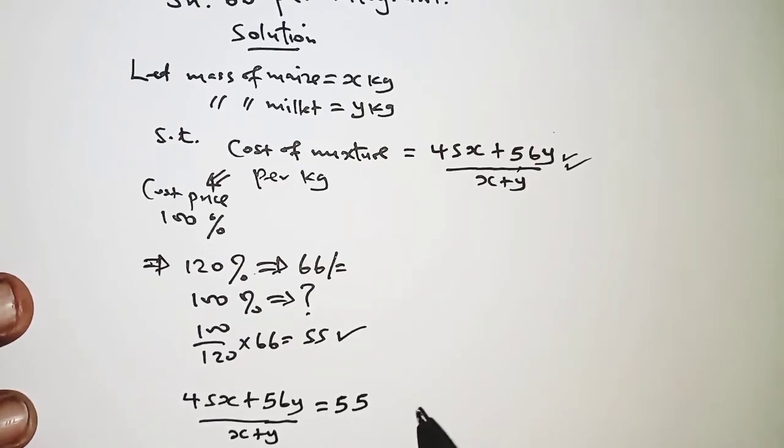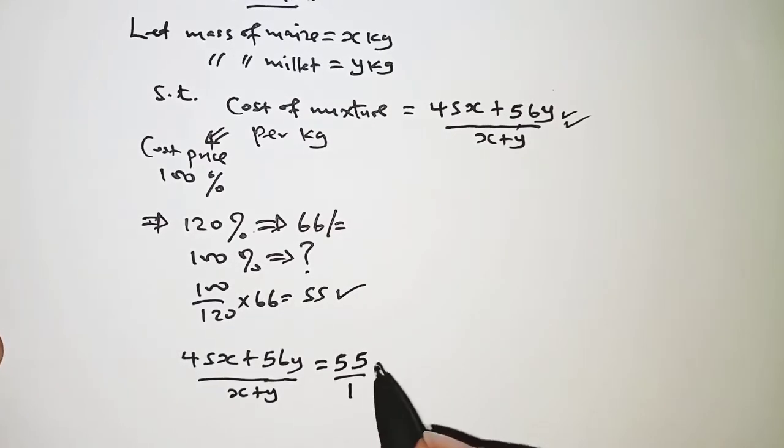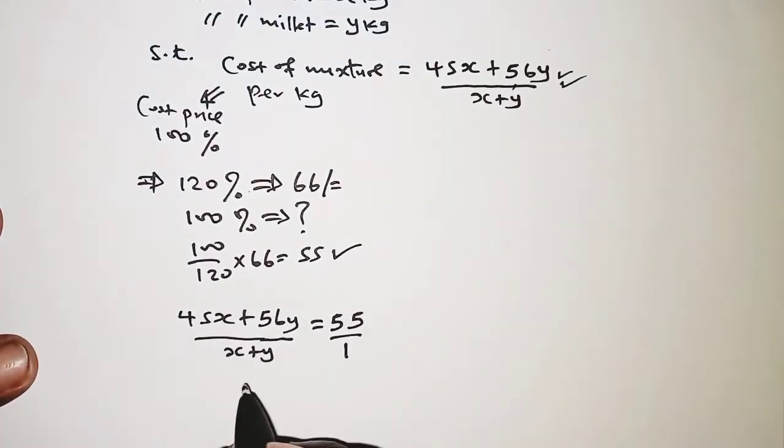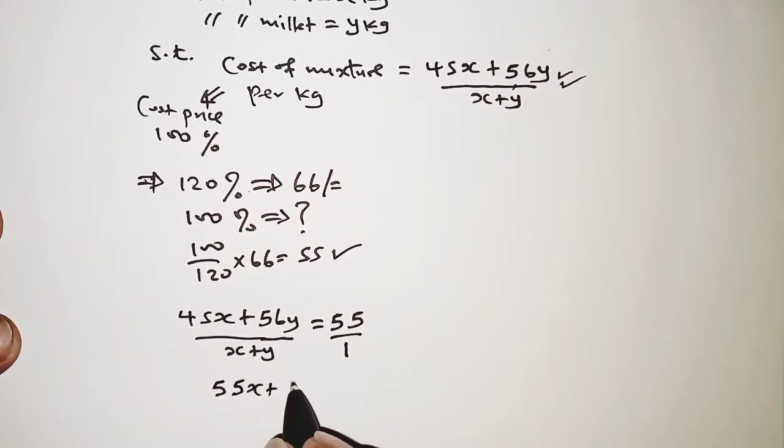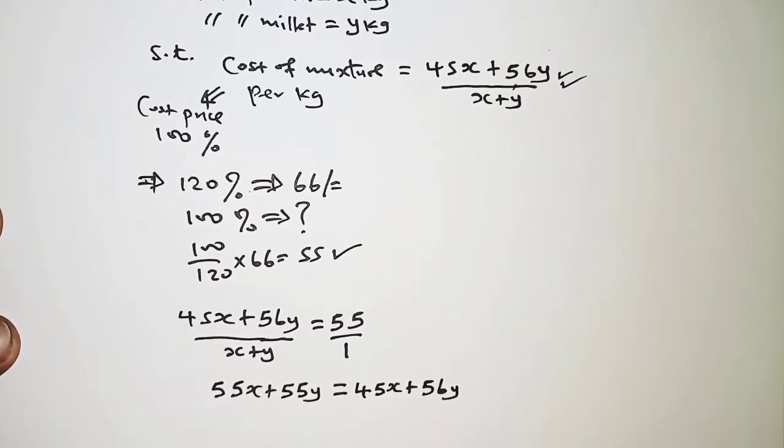Now for this case we are supposed to be cross multiplying, so for the sake of cross multiplication we'll have to have this over 1. So when we multiply across we have 55x plus 55y, that should be equal to 45x plus 56y.